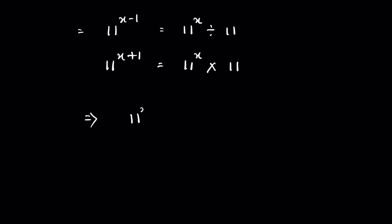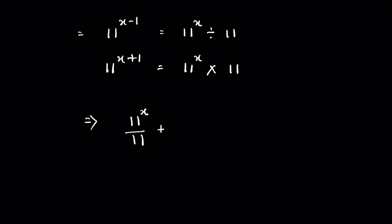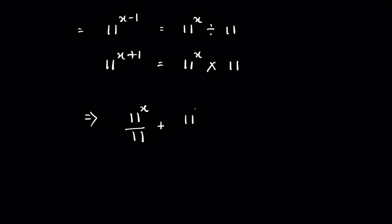So in this question we can write 11 raised to the power x minus 1 as 11 raised to the power x upon 11, plus 11 raised to the power x plus 1 as 11 raised to the power x times 11, equals 14762. Now we can take 11 raised to the power x common.